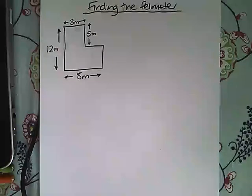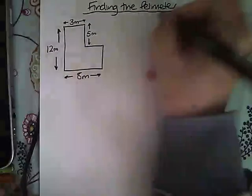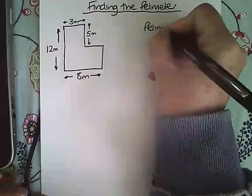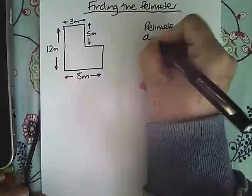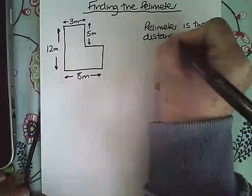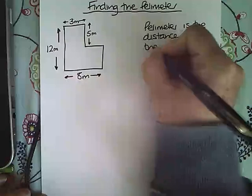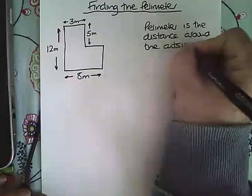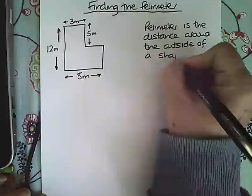Now first of all we need to know what the word perimeter means and it means the distance around the outside of a shape. So let's write that down. Perimeter is the distance around the outside of a shape.